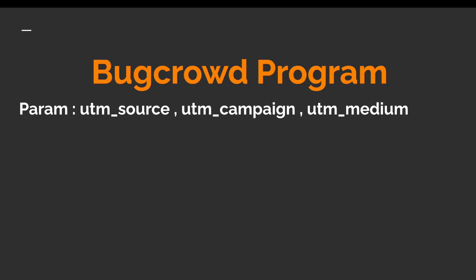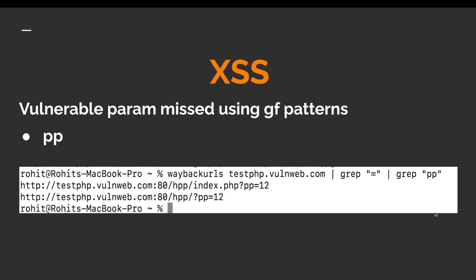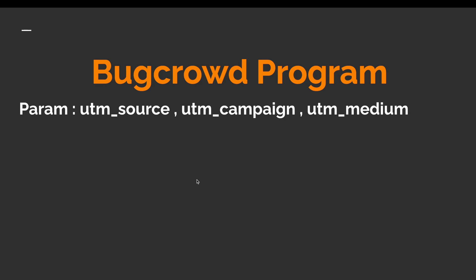Testing on many Bugcrowd programs, I identified that parameters like utm_source, utm_campaign, and utm_medium were vulnerable for many programs. But with GF patterns I was not able to identify these three parameters — yet they were vulnerable, and I successfully reported many vulnerabilities on Bugcrowd based on them. So what I generally use is 'grep =' to get all parameters and then hunt manually on those parameters.